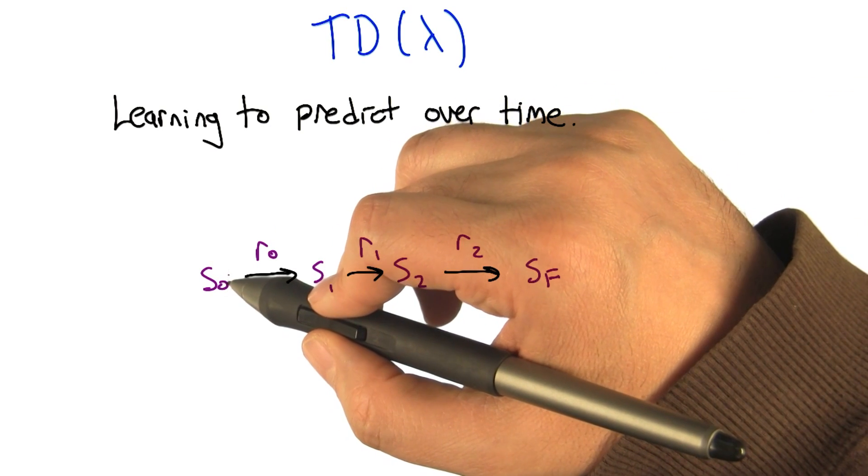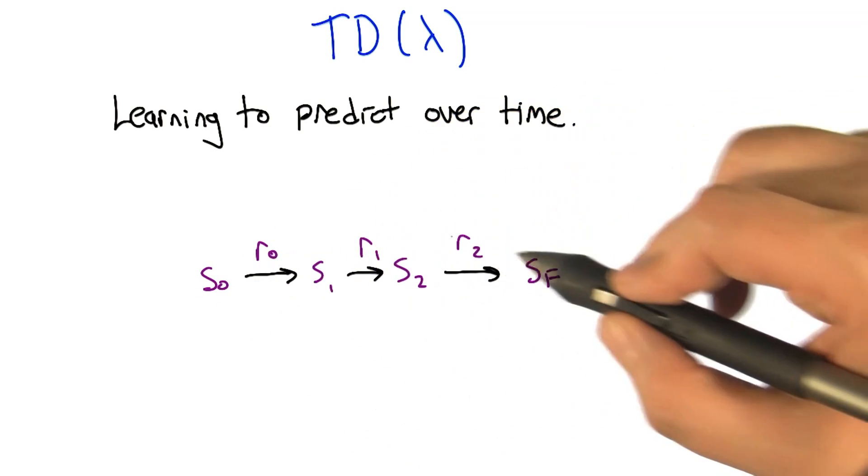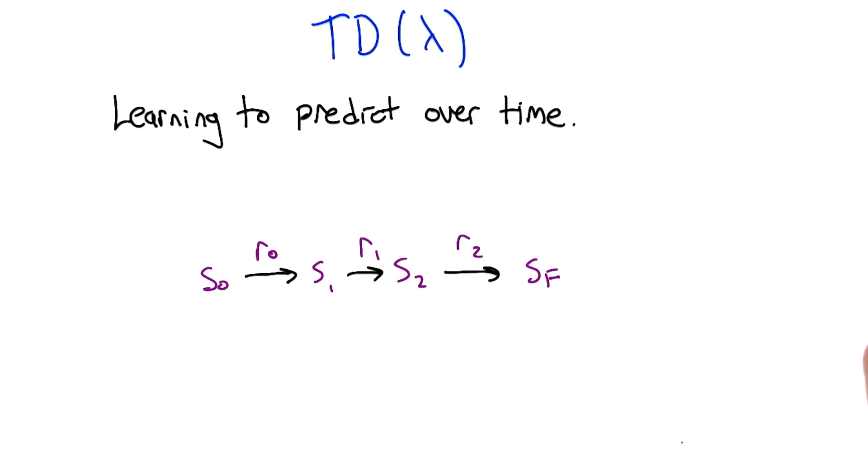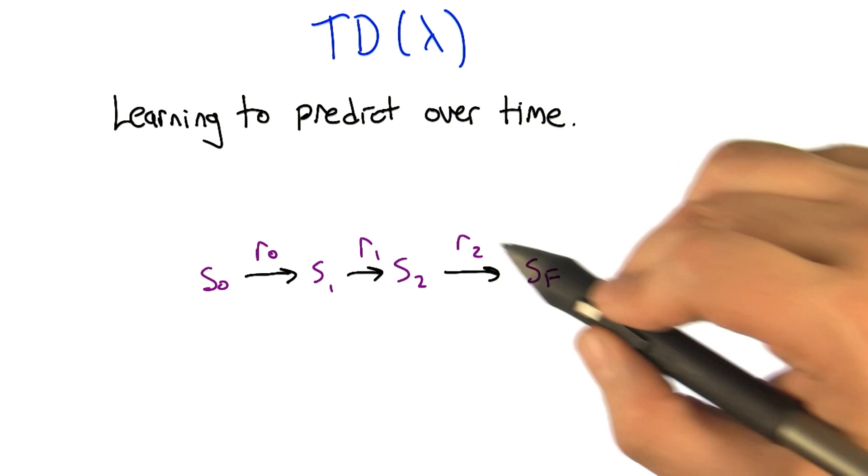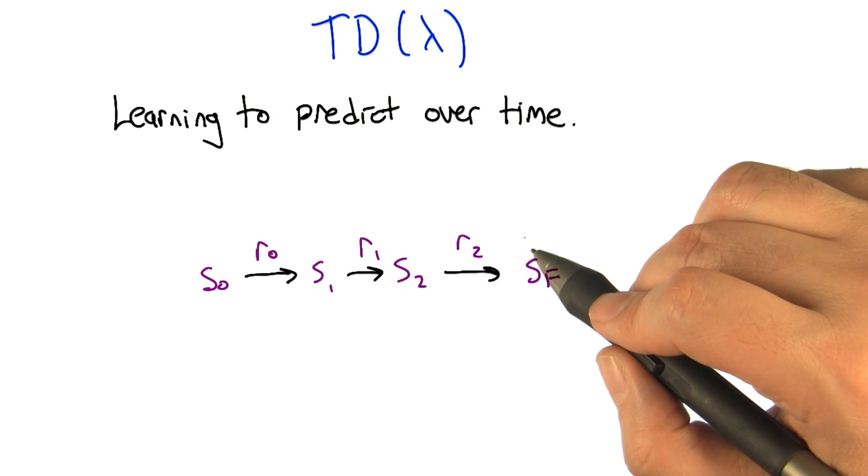Each time there's a transition, there's some reward associated with that. We're going to try to predict the expected sum of discounted rewards from that, which is what we're trying to do anyway.